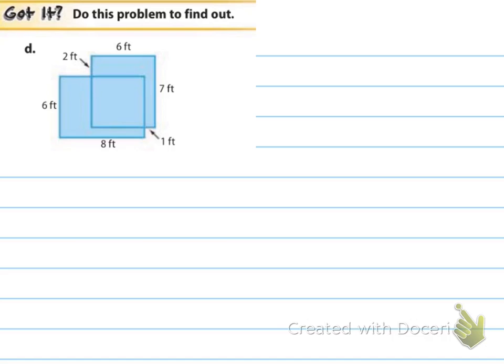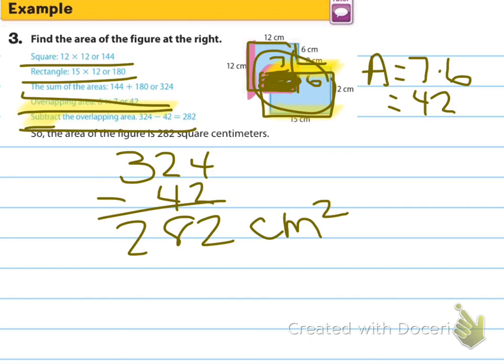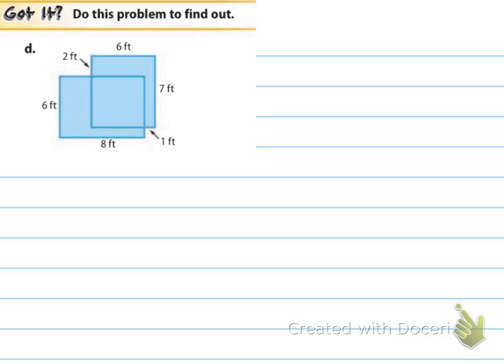Go ahead and do D — use the steps from example 3. Find the area of each shape, add them together, then find the area of the overlapping region and subtract it. I know it sounds like a lot, but it's right there cut and dry. Pause video now.